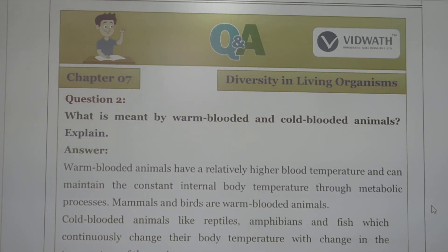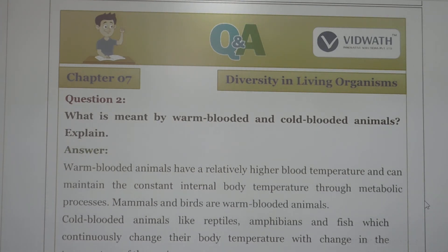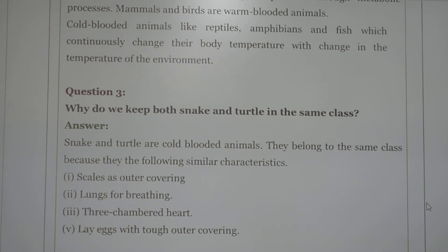Next question: what is meant by warm-blooded and cold-blooded animals? Fishes, amphibians, and arthropods are all cold-blooded animals. Birds and mammals are warm-blooded animals. Warm-blooded animals maintain a relatively high and constant internal body temperature through metabolic processes. Cold-blooded animals — including reptiles, amphibians, and fishes — continuously change their body temperature with changes in the temperature of the environment. We keep both snakes and turtles in the same class because they are both crawling animals.